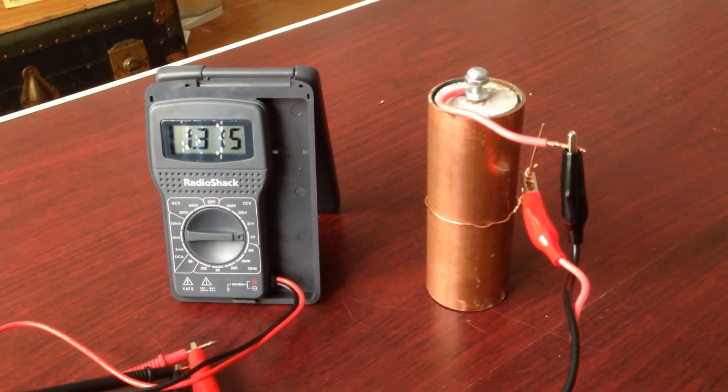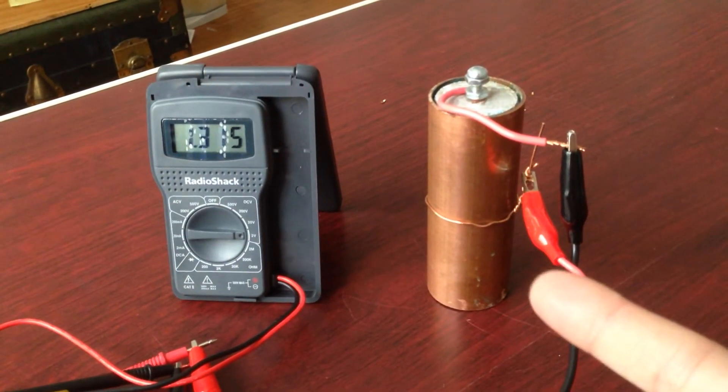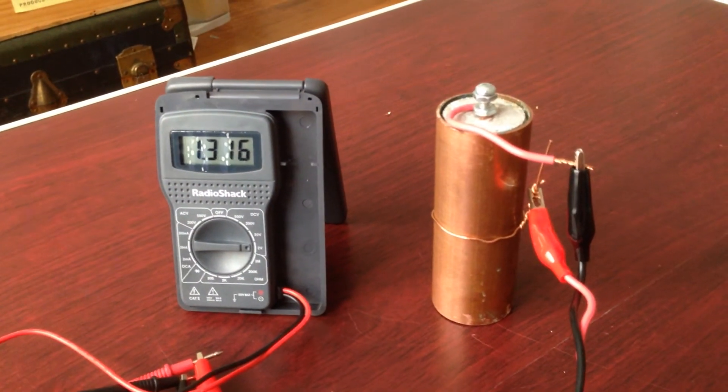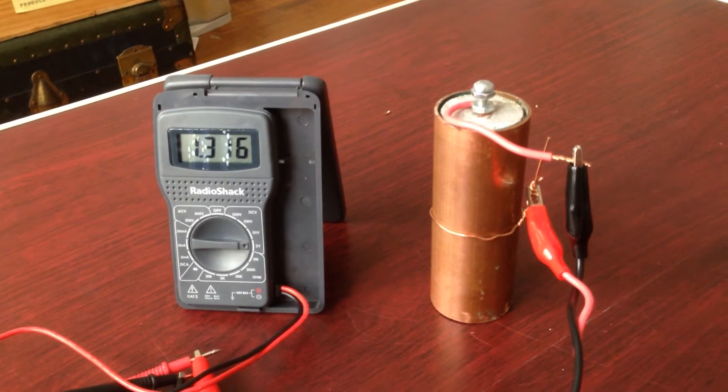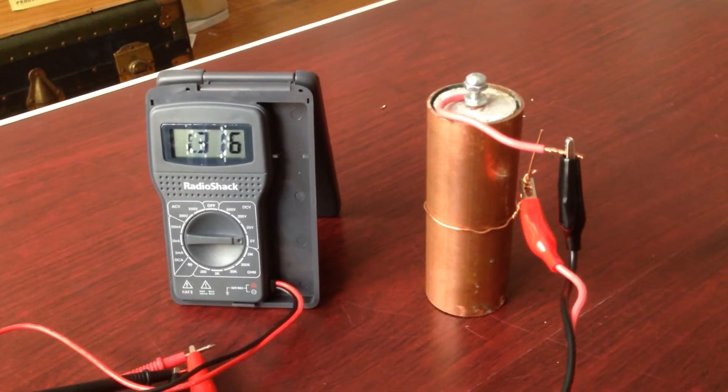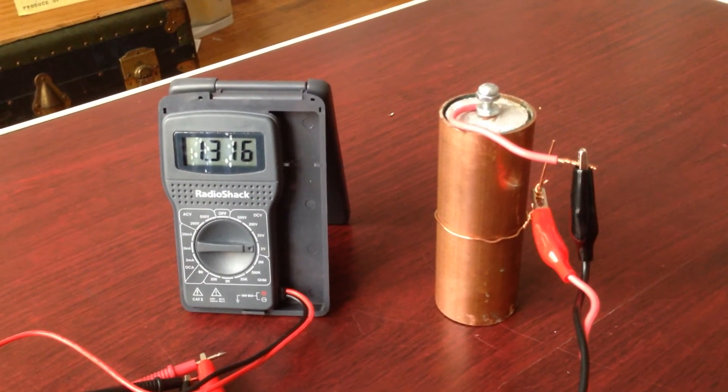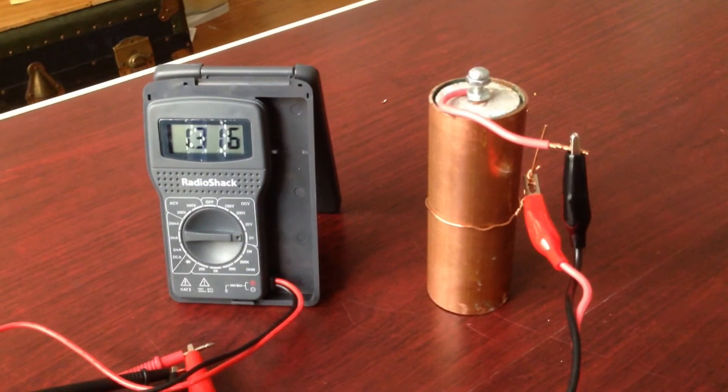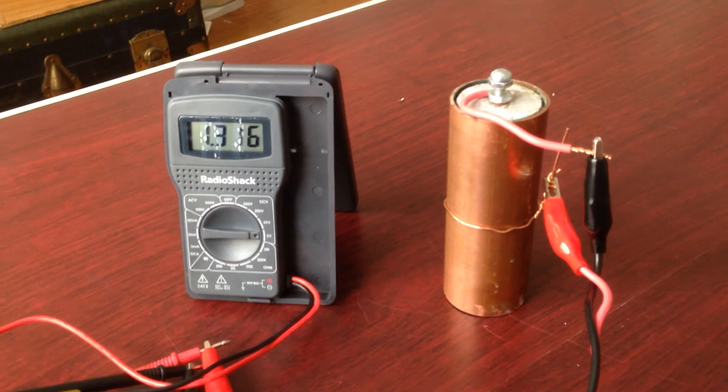So my next project is I'm actually going to cut this baby up into three pieces. And my hypothesis is if I do that, cut it up into three parts, I should be able to produce 4.5 volts. But with this current setup, I'm only going to get one and a half.